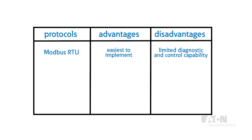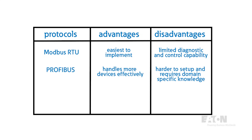Modbus RTU is extremely basic — it's only about passing bit information, so it's the easiest to implement. However, that also means it only has basic capabilities like reading and writing values, with very limited diagnostic and control capability. PROFIBUS, or Process Fieldbus, is a newer, more capable implementation. It's faster and has dedicated handshake procedures, making it able to handle more devices effectively. This makes it much harder to set up and requires domain-specific knowledge, but the result is an extremely effective protocol that serves as the backbone for most industrial automation systems.